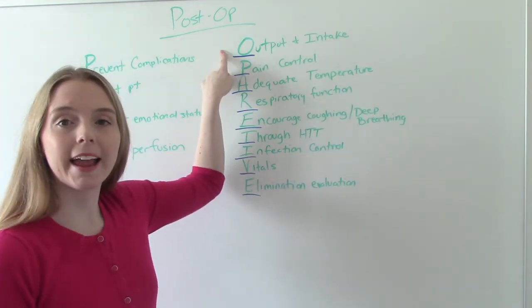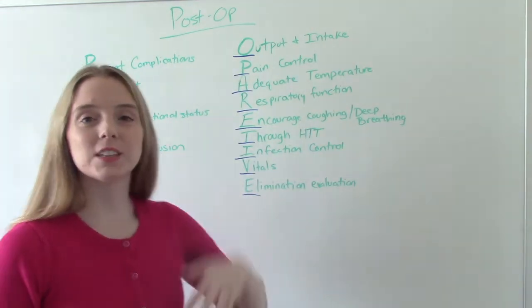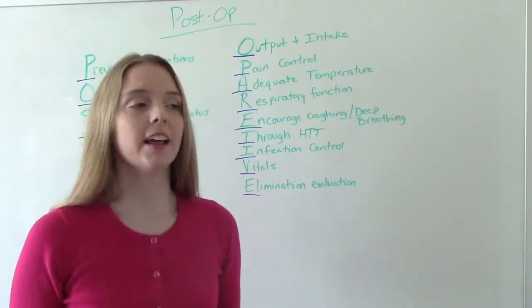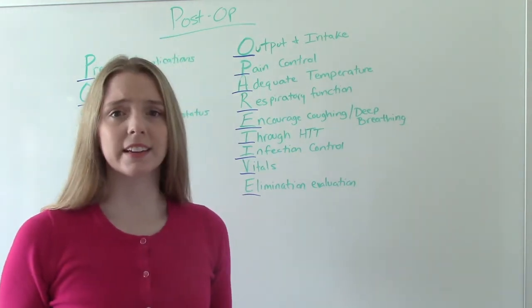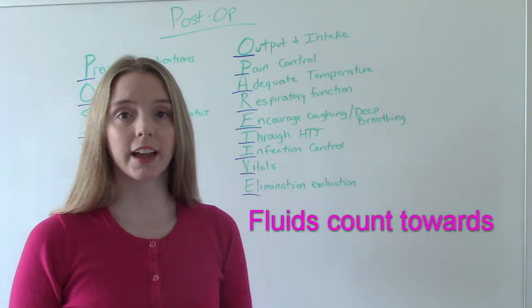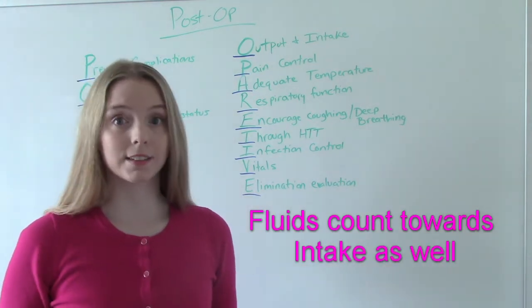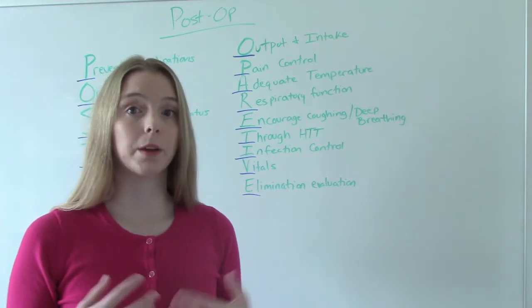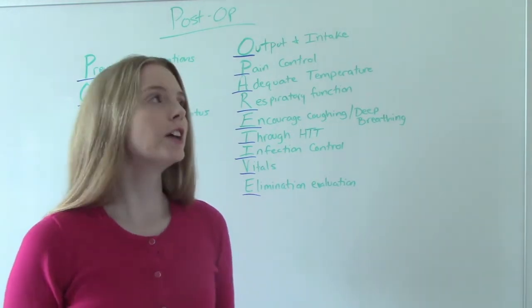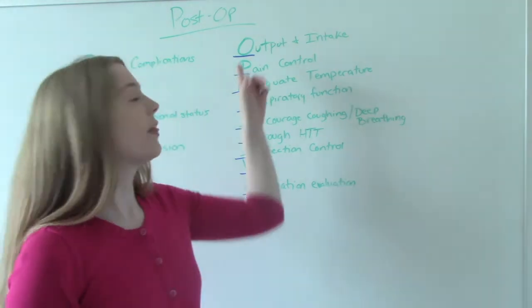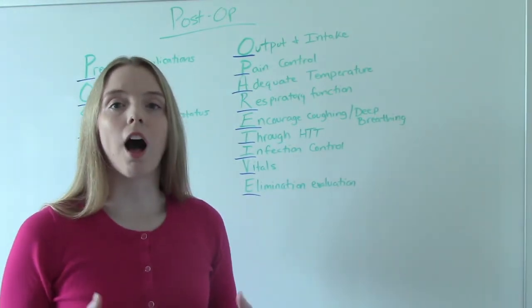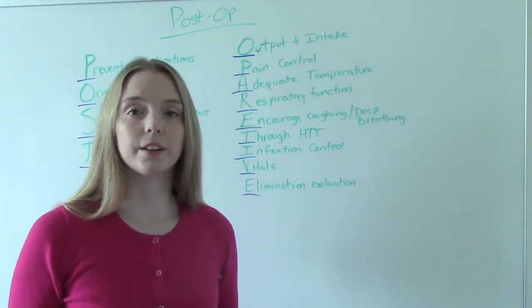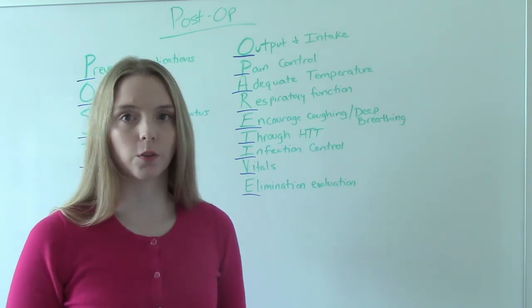O is for output and intake. So if this was a general anesthetic, then they're probably not allowed anything except maybe little sips of ice chips or something like that. If it wasn't, if this was like a regional or a local, they might be allowed to have something to eat or maybe some clear liquids, whatever. So monitoring their input and then their output. So oliguria, less than 30 mls per hour of urine, that's something we're looking for.